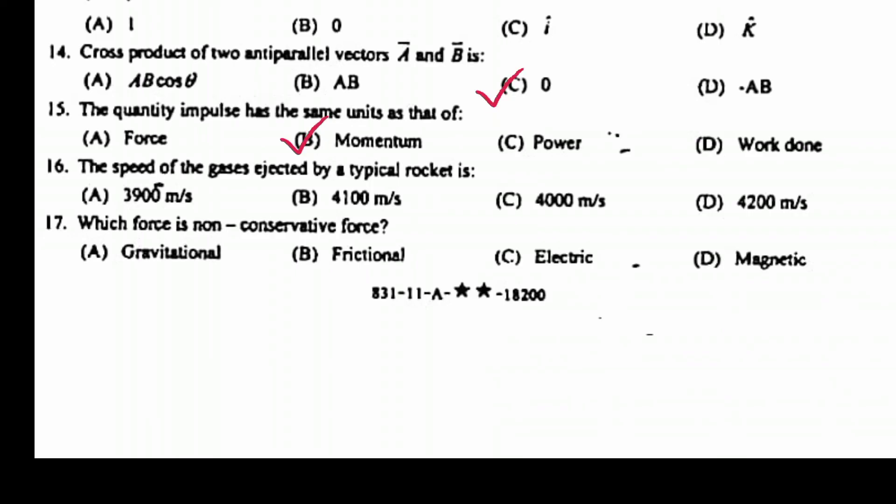The speed of gases ejected by a typical rocket is 4100 meter per second. Which force is non-conservative force? Frictional.